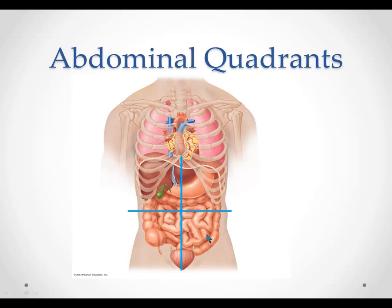This would be the L-L-Q, or left lower quadrant. Primarily the intestines, small and large, are located here. And on this side it would be the R-L-Q, which would be the right lower quadrant. An important organ we find here is the appendix, this small finger-like extension. It's a very common organ for people to end up having surgically removed because of inflammation and impaction with fecal matter.